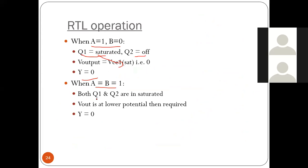When A and B both are 1, Q1 and Q2 both are in saturation so your output will be 0. This is RTL operation.